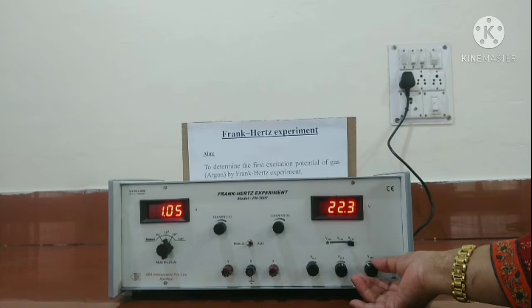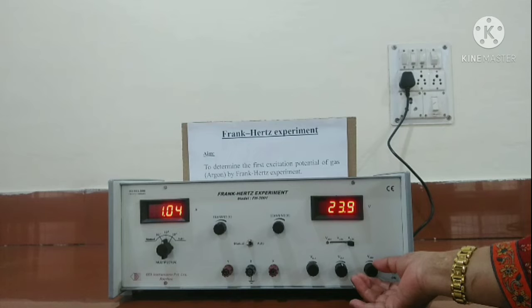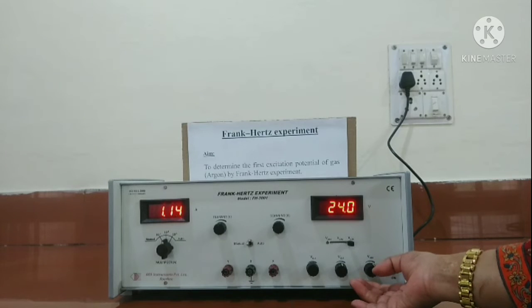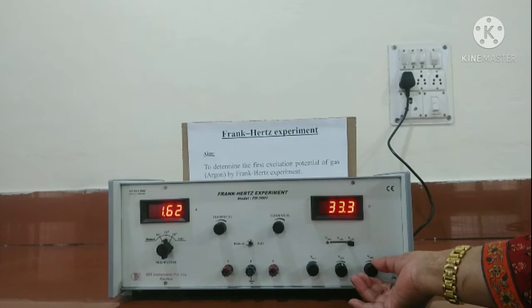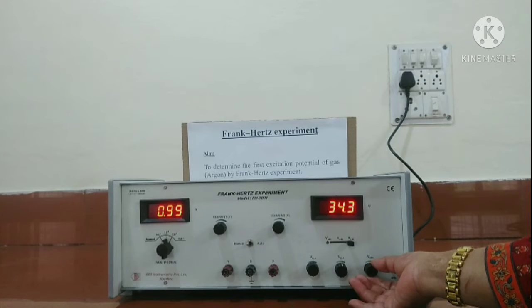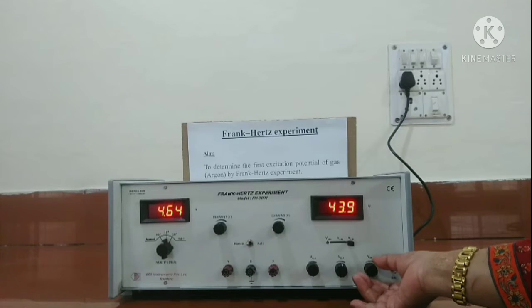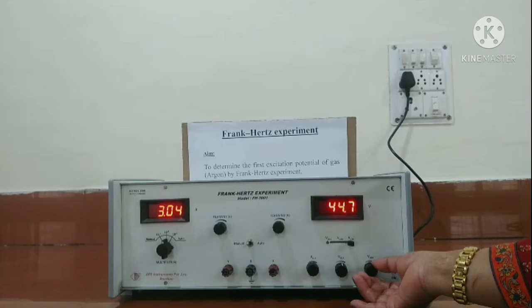We can go up to 60 volts, but we have to keep an eye that the current should not increase suddenly. If it happens, we must stop the experiment at that moment because it may damage our tetrod valve. I have tried to show the values of current, how it is increasing and decreasing in between at some intervals, because to show all the data here is not possible.